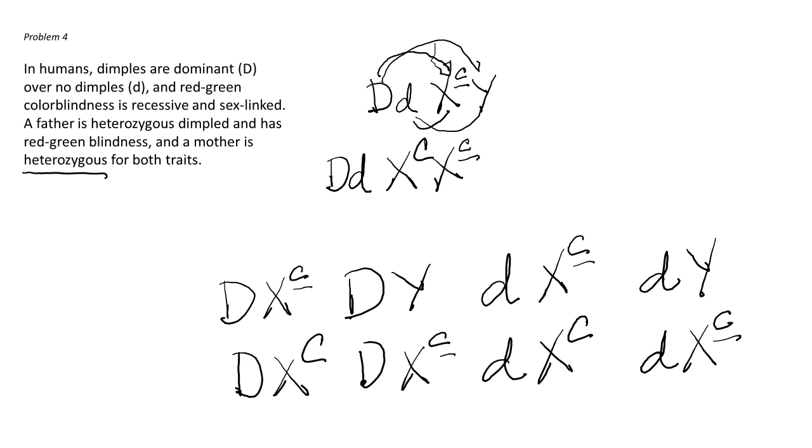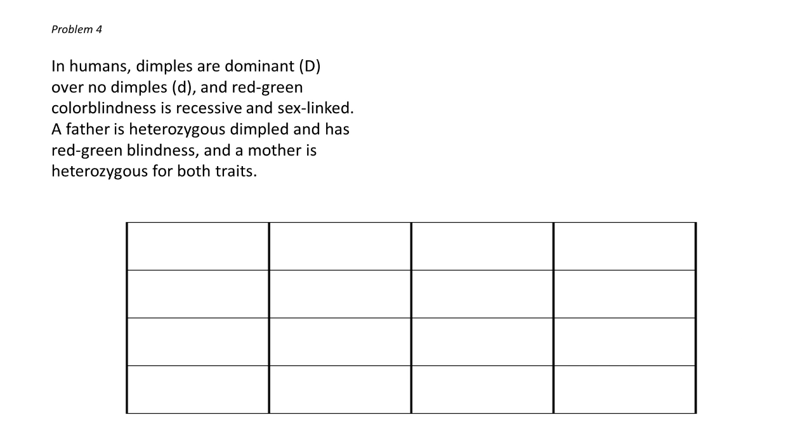This would mean we would need a 16 box Punnett square. Notice that we've segregated the alleles the same way we would do, even if this was not a sex-linked trait. But we use the chromosome so that we'll be reminded that it's an X or a Y chromosome. Let's put those different gametes that they could make along these boxes.